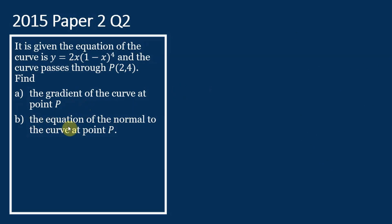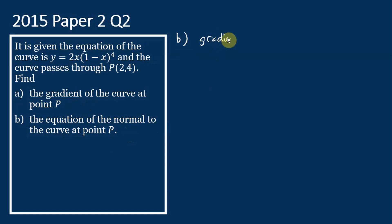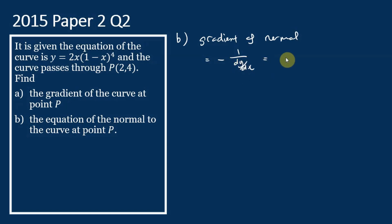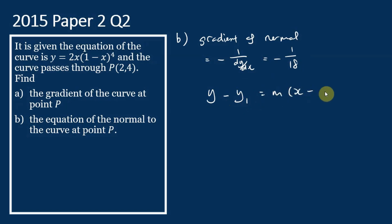Let's move on to part (b). We need to find the equation of the normal to the curve at point P. The normal is a line perpendicular to the tangent. To find the equation of the normal, we need the gradient of the normal. The gradient of the normal equals negative 1 over dy/dx. Since dy/dx = 18, the gradient of the normal equals negative 1 over 18.